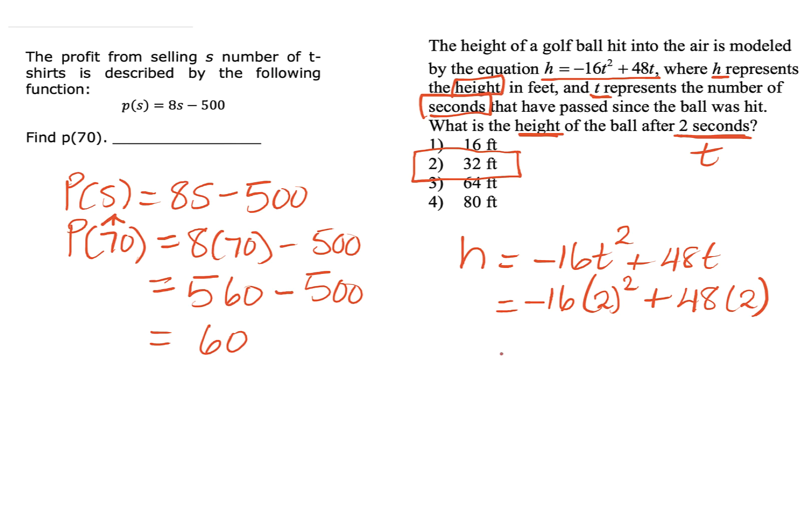But if we had to do it manually, we're on the section where you cannot use your calculator. Exponents are first. So this will be negative 16. 2 squared is 4 plus 48 times 2. Next, we would multiply. Negative 16 times 4 would give me negative 64 plus 48 times 2 is 96. Remember with your integers, when the signs are different, you subtract. So if you went on the side to subtract this, 4 from 6 is 2, 6 from 9 is 3, my answer 32.